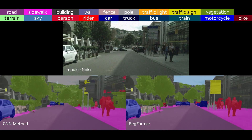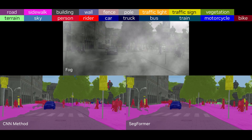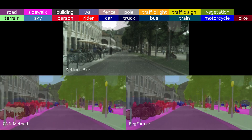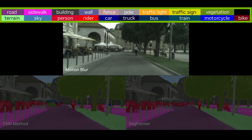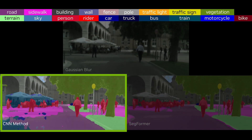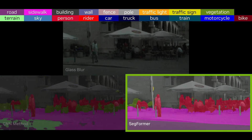To evaluate the robustness of Secformer, we tested its performance under 16 different perturbations. These included noise, blurs, and weather events that might represent common real-world unseen conditions. The top shows the original image, and we aim to label it into 19 categories. The bottom shows the results for a traditional CNN method on the left, and our Secformer on the right.